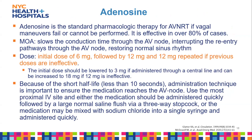Adenosine is the standard pharmacologic therapy for SVT, shown to be effective in over 80 percent of cases. It slows conduction through the AV node, interrupting the reentry pathways and restoring normal sinus rhythm. The initial dose is 6 mg, followed by 12 mg, and 12 mg repeated if previous doses are ineffective.